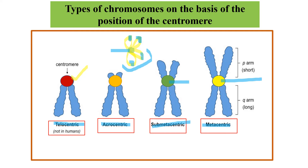In metacentric chromosomes, the centromere is at the center of the chromosome. If we talk about the length of the arms — we usually term the short arm as the p arm (petit) and the q arm as the long arm — in metacentric chromosomes both arms are nearly equal in length.